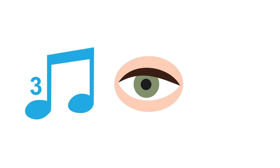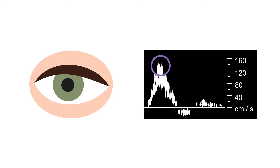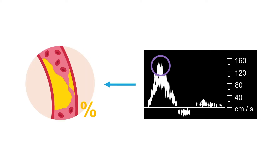Triphasic looks and sounds triphasic still. The difference is with duplex you can see the vessel and confirm it is widely patent. It also records the waveform on a velocity scale, which helps grade the percentage of stenosis.